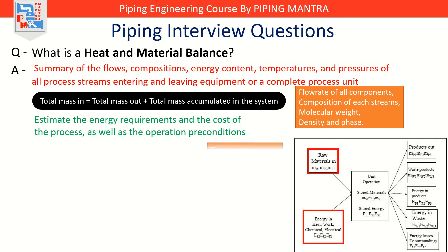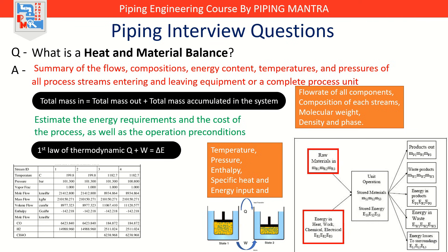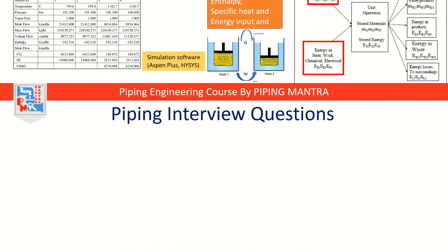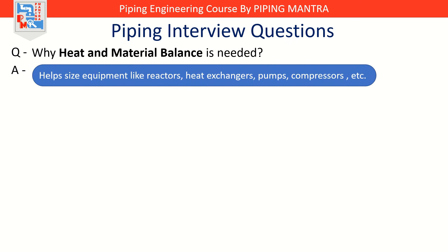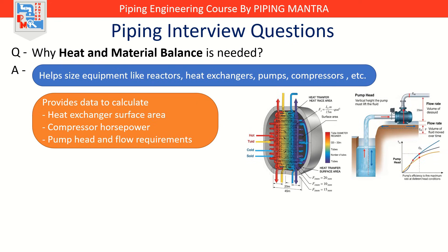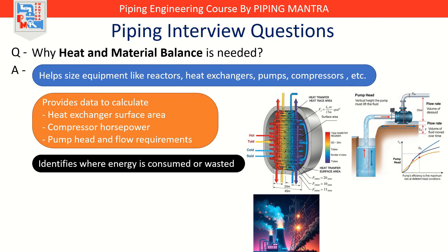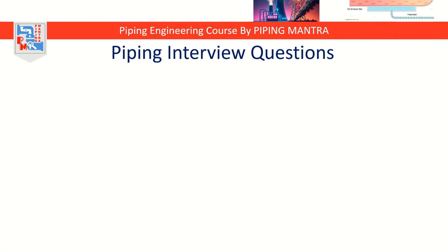In heat balancing, we look at temperature, pressure, enthalpy, specific heat, and energy input and output for equipment like coolers and reactors. Heat balance is calculated based on the first law of thermodynamics: Q + W = ΔE. It is typically presented in a table format, often used with process simulation software like Aspen Plus. Heat and material balance is needed because it ensures all mass and energy flows are accounted for, helps size equipment like reactors, heat exchangers, pumps, and compressors, provides data to calculate heat exchanger surface area, compressor horsepower, pump head and flow requirements, and identifies where energy is consumed or wasted — helping optimize steam usage, cooling loads, and waste heat recovery.